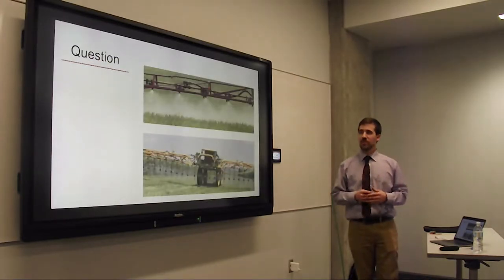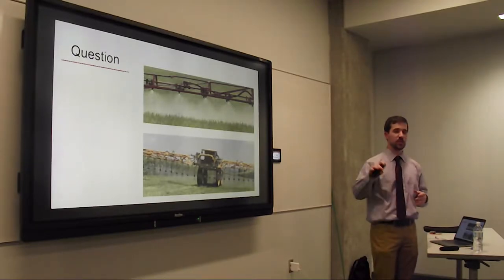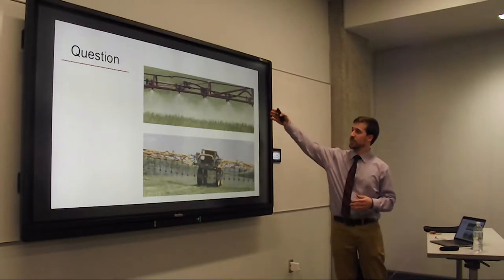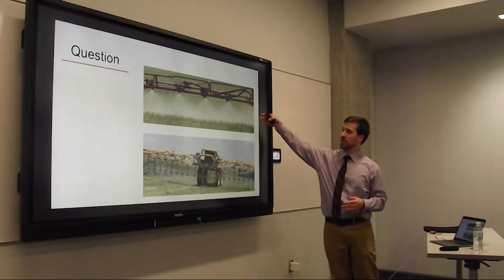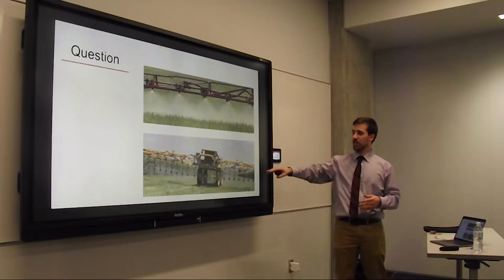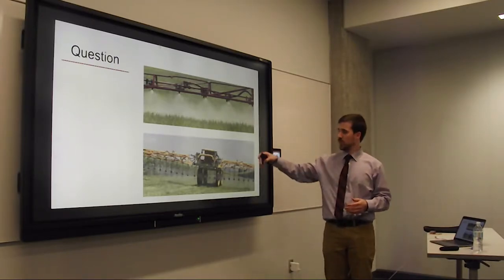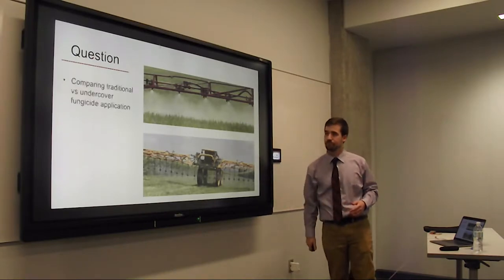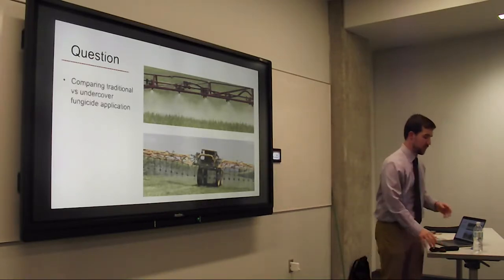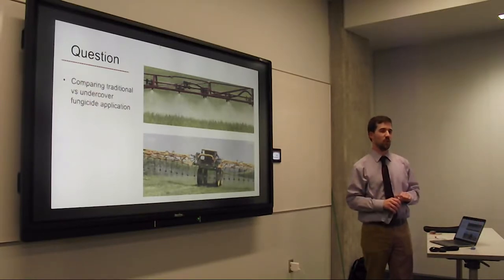The question of my research is to look at that first method farmers used — the traditional application spraying down on top of a crop — and compare it to the undercover technology, which runs through the row with multiple nozzles as well as spraying downward. Before I move on, does anybody have any questions about the difference between these two, because that's going to be the bulk of the rest of my talk?